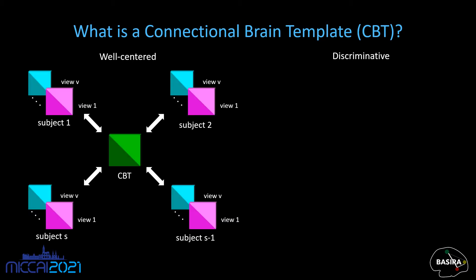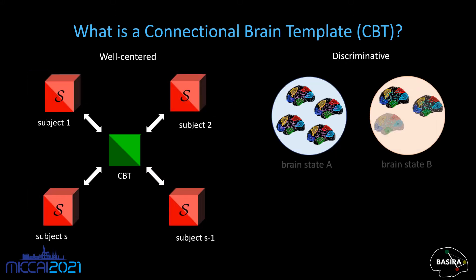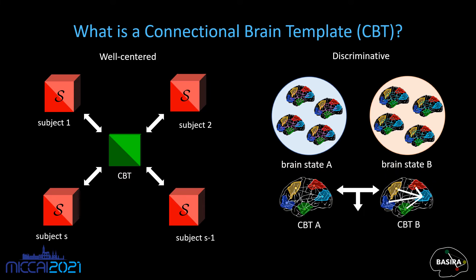We represent the CBT and each view of the subject as symmetric adjacency matrices. After we stack these adjacency matrices of views, a subject is represented by a tensor. In terms of discriminativeness, let us have two different populations with different brain states, let's say A and B. After we integrate each population into a CBT, we can compare overall differences and easily determine the distinctive connectivities or regions.